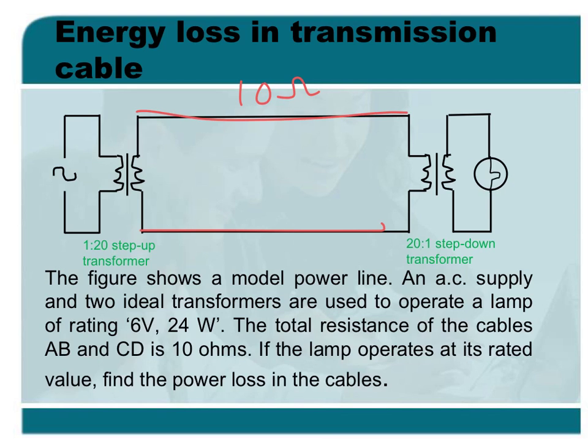If the lamp is operated at rated values, that means the lamp needs 6V and it will supply 24W. We are asked to find the power loss.